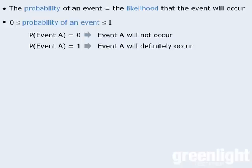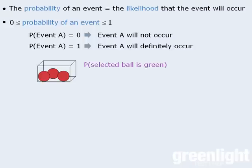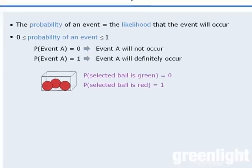For example, let's say we have a box that contains three red balls. If one ball is selected at random from the box, we can examine various probabilities. The probability that the selected ball is green is equal to 0, since it would be impossible to draw a green ball from the box. Conversely, the probability that the selected ball is red is equal to 1, since we can be certain that the selected ball would be red.